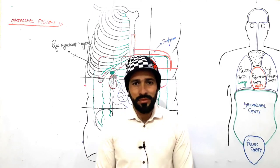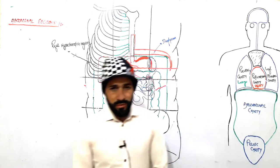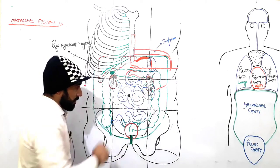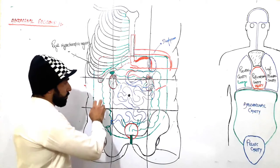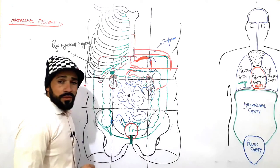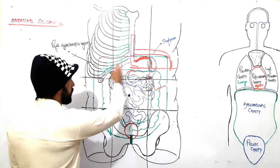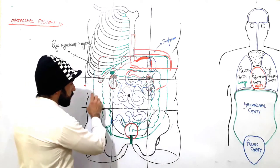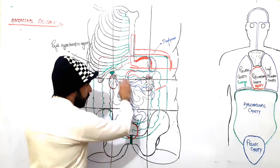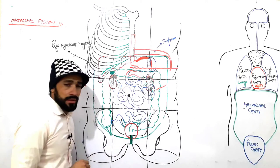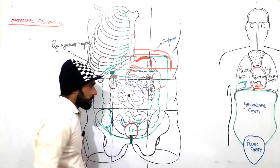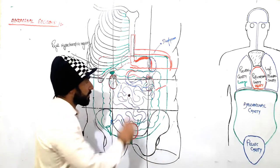Assalamu alaikum, dear friends, welcome back. We are discussing the abdominal regions. So far I have discussed the organs present in the left lumbar region, the right lumbar region, and all the superior three regions. Now we are going to discuss the organs which are present in the umbilical region. I will give the links of all these videos in the description so you can watch those lectures to have a clear concept.